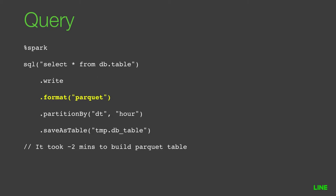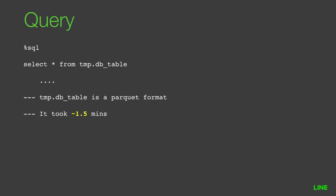My first approach was to simply convert the data to Parquet format, since Parquet is known to be much faster than raw data format when filtering. Converting one hour of data to Parquet took around 2 minutes, which seemed reasonable. But querying it again still took one and a half minutes and still executed 1,535 tasks, because the query still reads all of the data.